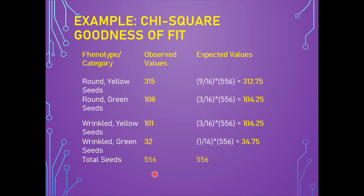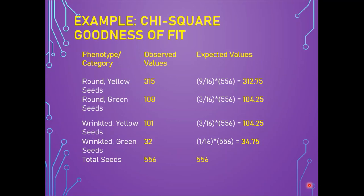In the actual scenario, this ratio can differ in a given set of seed samples. The observed values for a sample of 556 seeds are: round yellow = 315, round green = 108, wrinkled yellow = 101, and wrinkled green = 32. These four categories form the basis for the chi-square calculation.